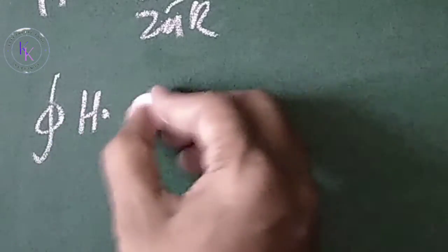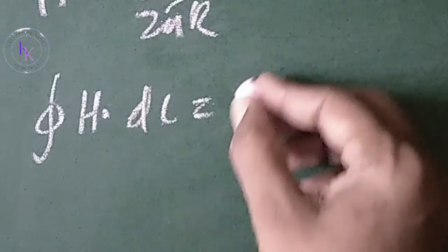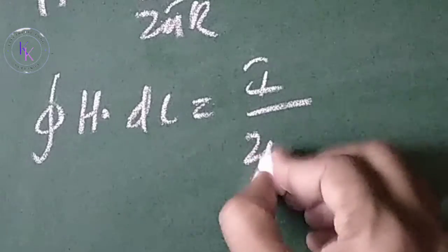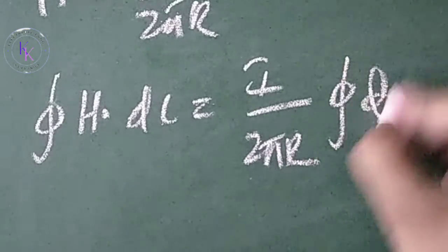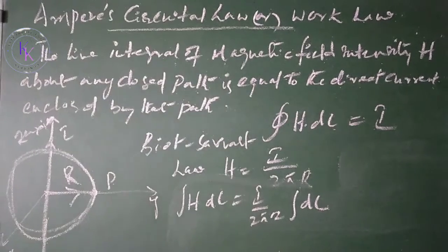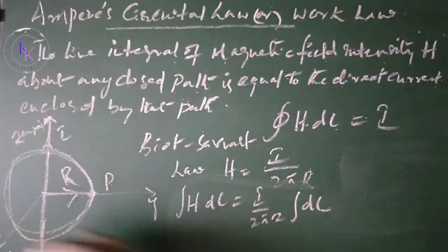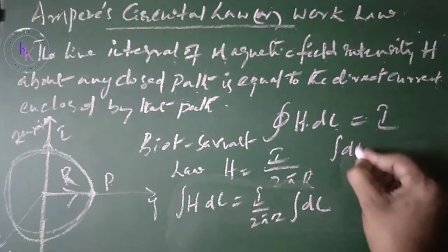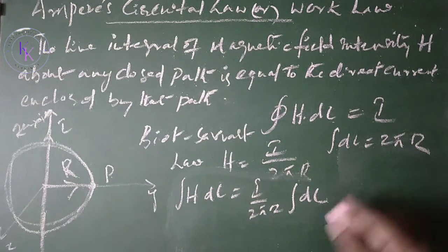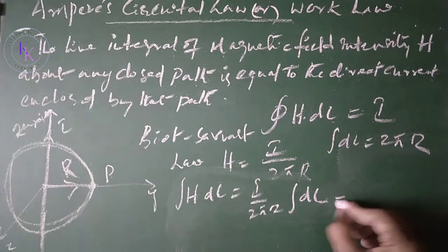Applying Ampere's Circuit Law, integral H·dl equals H. Substituting, we get I by 2πr times integral dl, where integral dl is nothing but the circumference of the circuit, 2πr. Then substituting that, we get I by 2πr into 2πr.